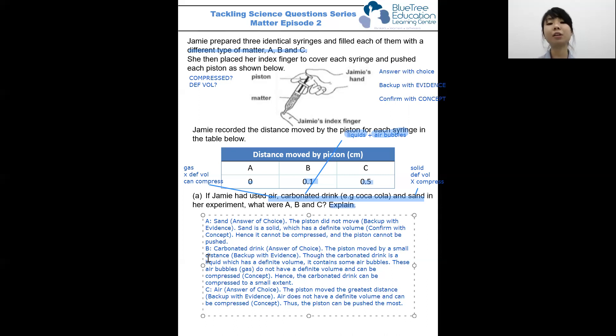So, the fact that for this question, that carbonated drink is used, it actually brings the difficulty level up by a notch. Now, parents should take note that an extension of the question can be, if B was water, will the piston be able to move? If B is water, take note that the piston will not be able to move, because water is a liquid, which has a definite volume and cannot be compressed. So, this question is really quite a handful, so do take some time to digest how I approached the question, how I analyzed it, and how I finally came up with the answer using the ABC technique.